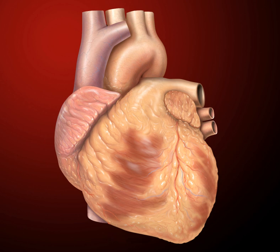The embryonic heart begins beating at around 22 days after conception. It starts to beat at a rate near to the mother's, which is about 75–80 beats per minute. The embryonic heart rate then accelerates and reaches a peak rate of 165–185 bpm early in the seventh week. After 9 weeks it starts to decelerate, slowing to around 145 bpm at birth. There is no difference in female and male heart rates before birth.